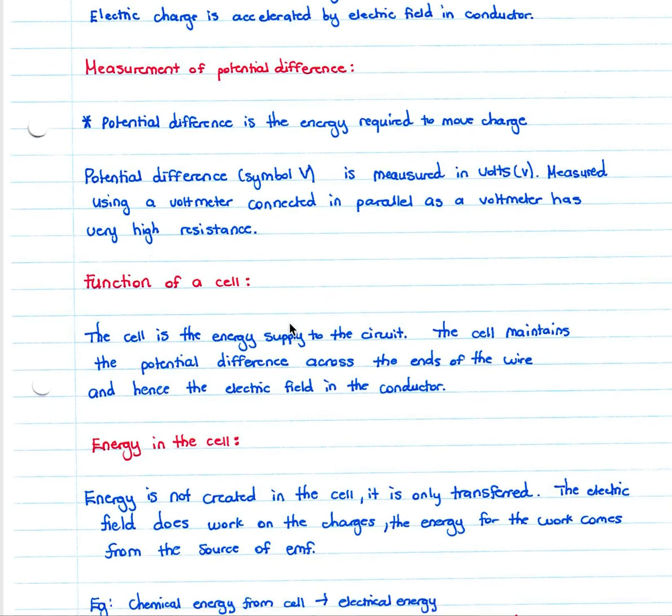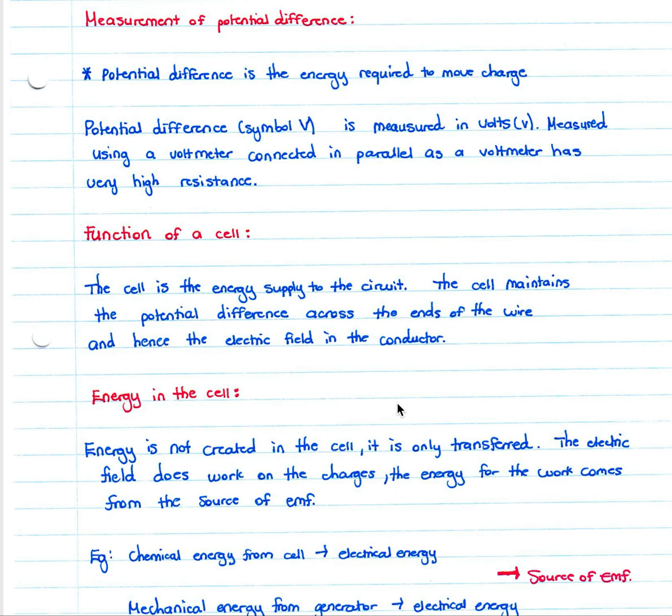The cell is the energy supply to the circuit. The cell maintains a potential difference across the ends of the wire and hence the electric field in the conductor. This causes the flow of charge through the conducting material.